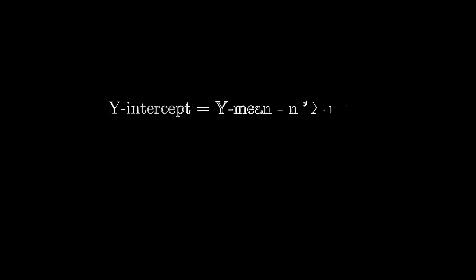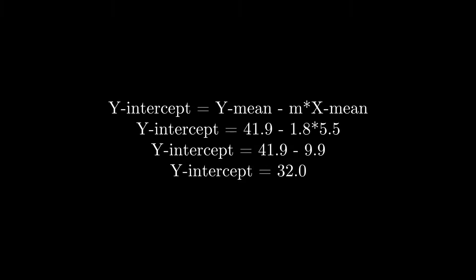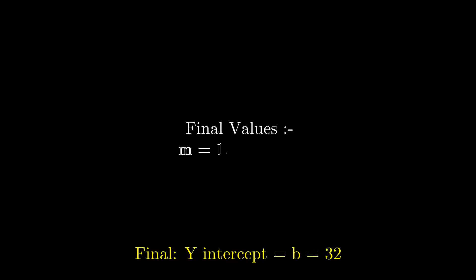Calculating y-intercept by the formula will give us equal to 32.0, which is obviously 32. All the final values are: slope equals m equals 1.8, and y-intercept equals b equals 32.